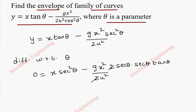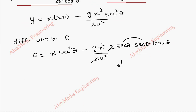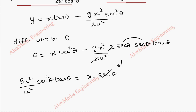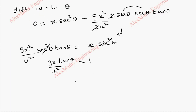We can cancel these two terms. Taking the other term to the other side, we can combine as secant squared theta. So now this is g x squared by u squared times secant squared theta times tan theta equals x secant squared theta. On both sides we can cancel secant squared theta, and we can cancel only the x term. So we are left with tan theta, and the remaining terms give g x by u squared equals 1. From this, we find tan theta equals u squared by gx.